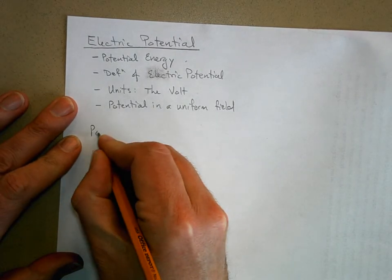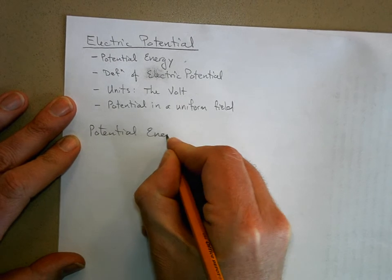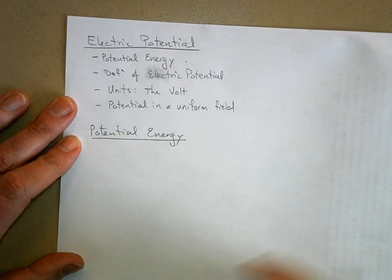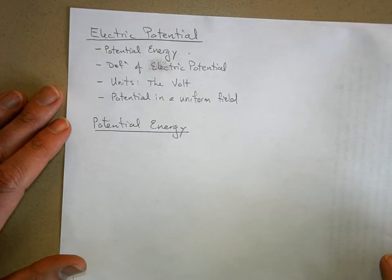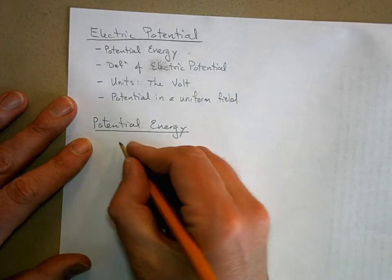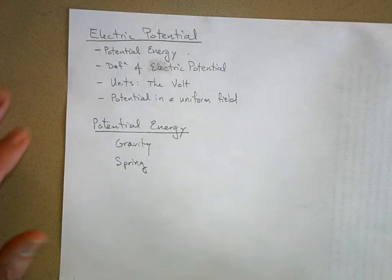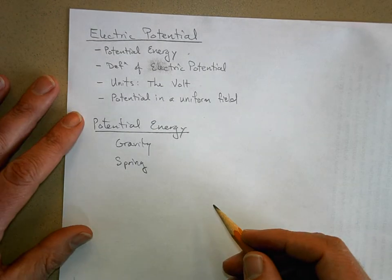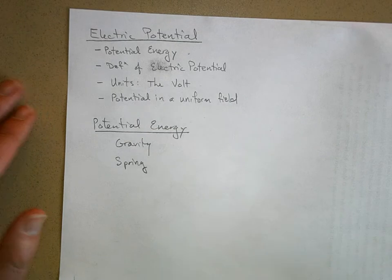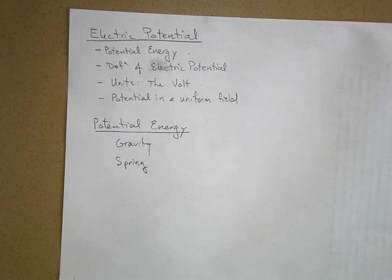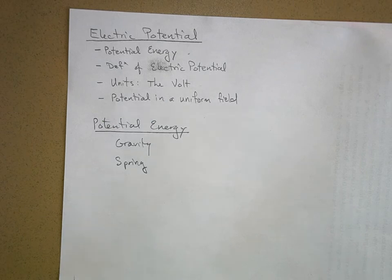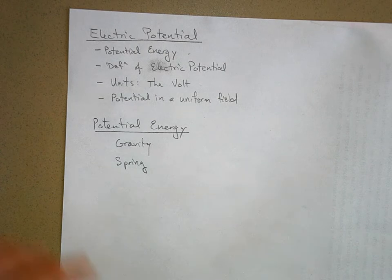Let's talk about what potential energy is. We've got two kinds we've discussed so far: the potential energy of gravity and the potential energy of a spring. In both cases, we said that potential energy is really the work that can be done by a conservative force. But really we're concerned with changes in potential energy when we're using them in problems.